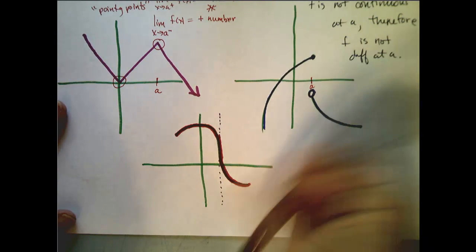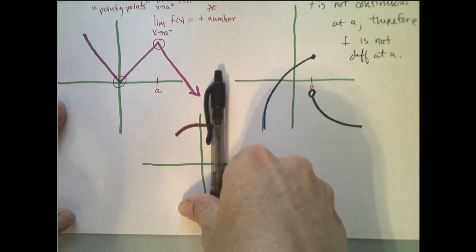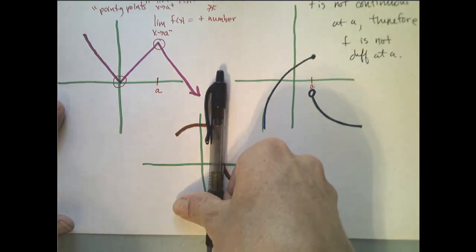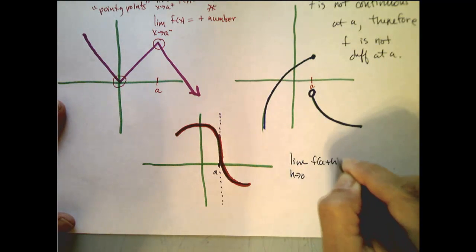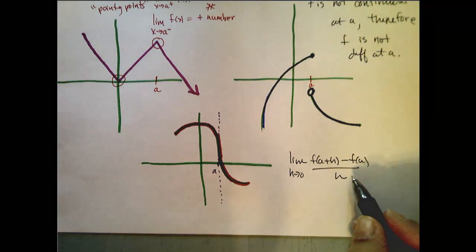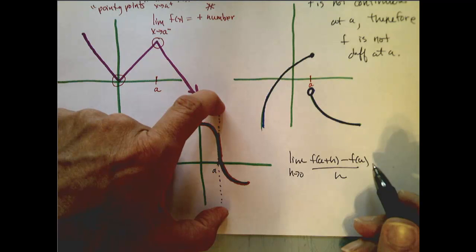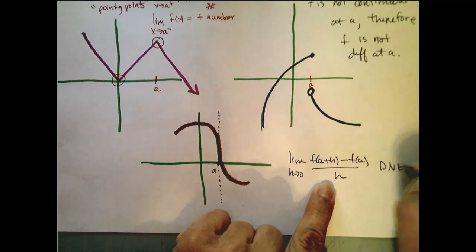And then we have this example right here, where this is my a value. At a, I have a vertical tangent line. And remember, what's the slope of a vertical line? Well, it's undefined. Which means, since the derivative at a is equal to the slope of the tangent line at a, this limit as h goes to 0 of f of a plus h minus f of a over h, which is the limit of our slopes of our secant lines, and if this tangent line has undefined slope, that means this limit is undefined or does not exist.